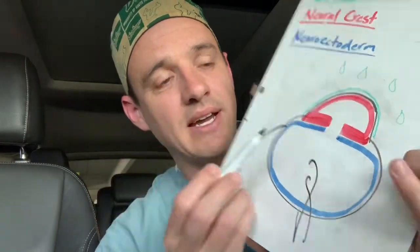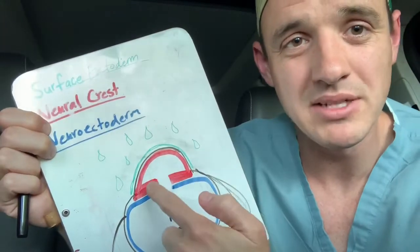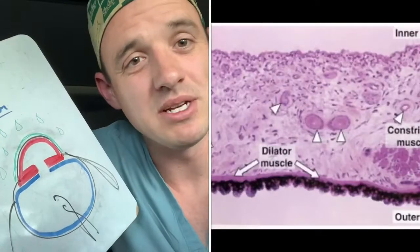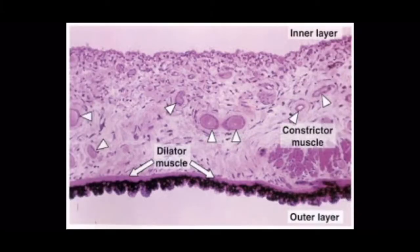There are also things that are super intuitive that I didn't even draw, like mesoderm — which is muscles, just like everywhere else in the body. The muscles are mesoderm. There are a few nuances, like what makes up certain portions of the sclera, or what makes up the sphincter and dilator muscles of the iris — those are actually made up of neuroectoderm. But that's not even that nuanced, because the dilator and constrictor are essentially a continuation of the iris pigment epithelium, which is neuroectoderm.